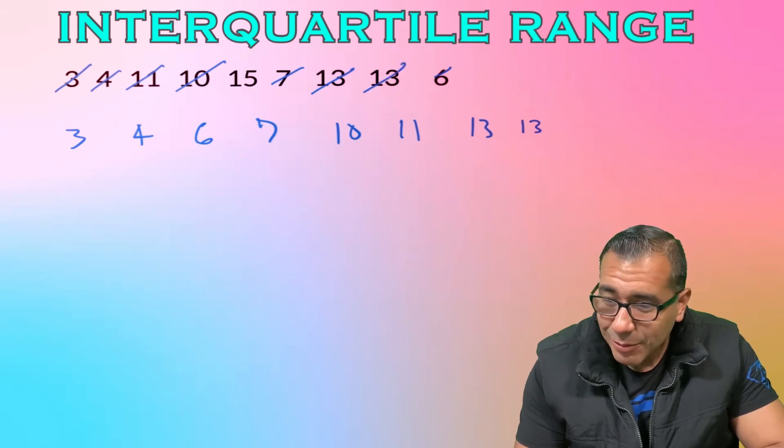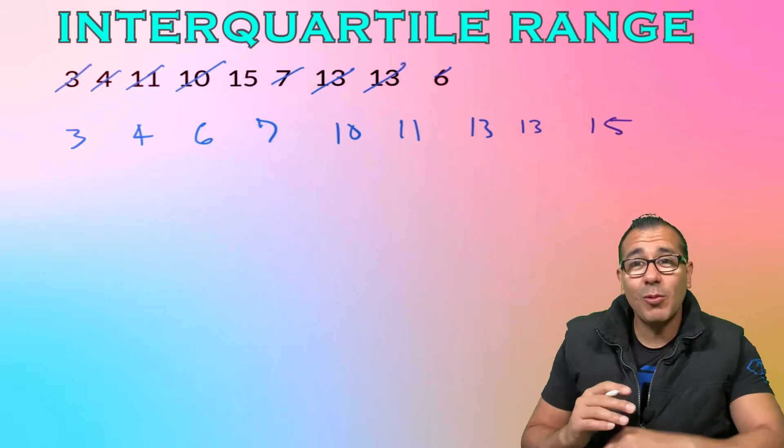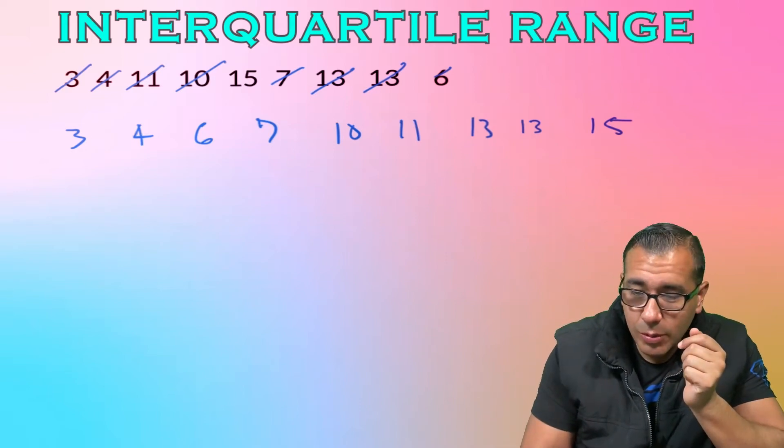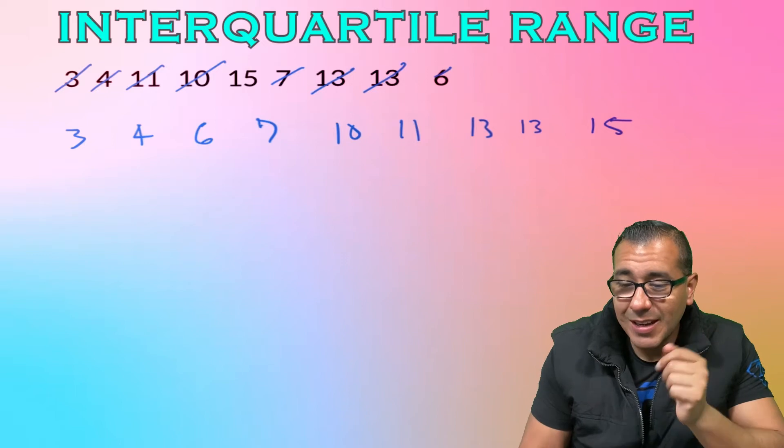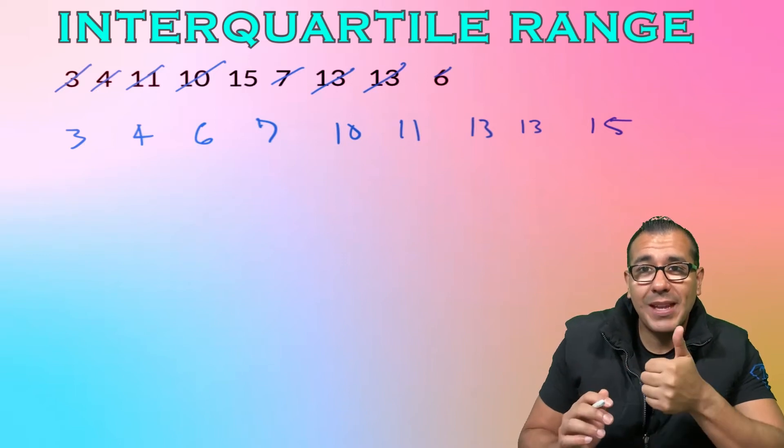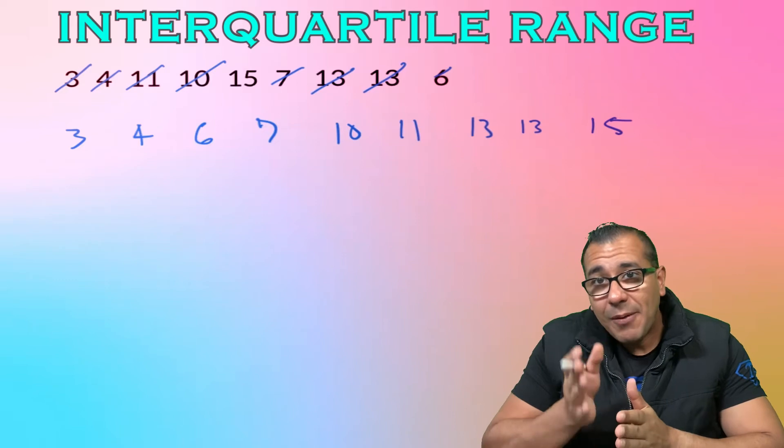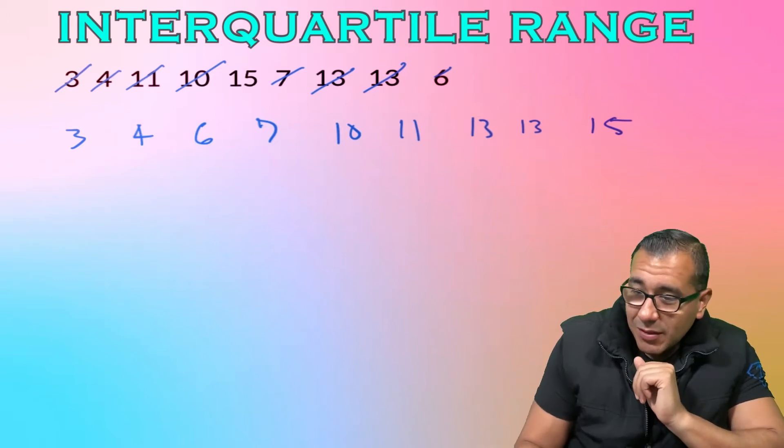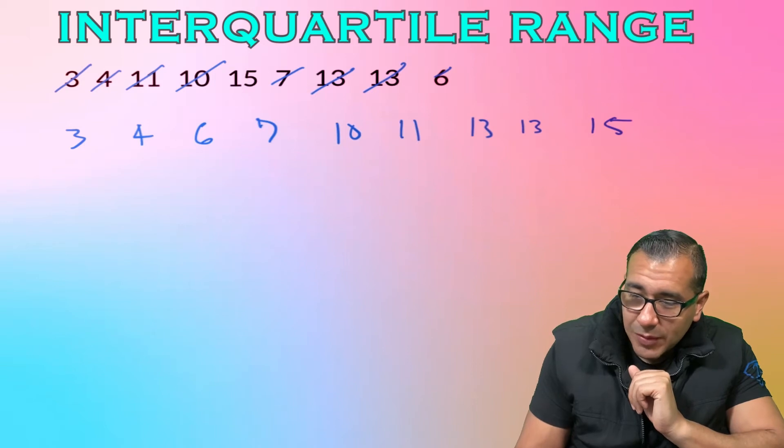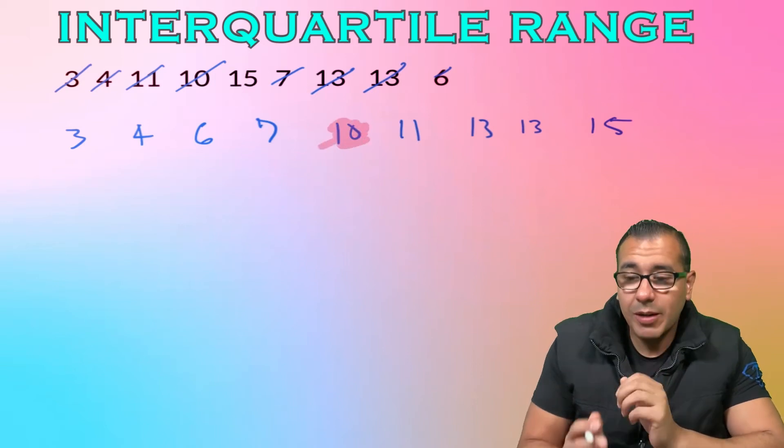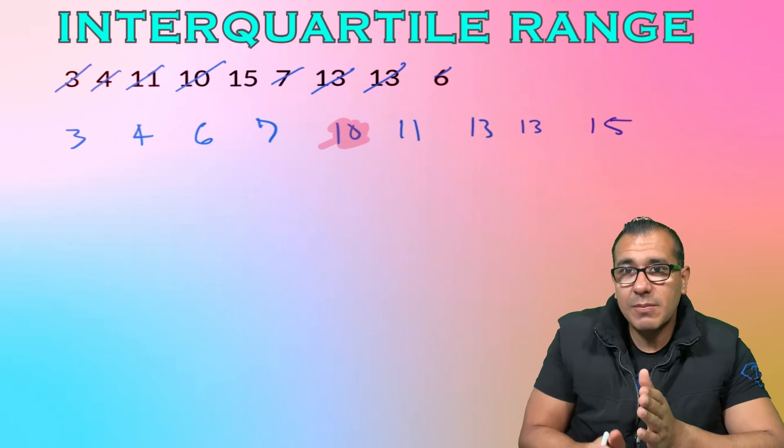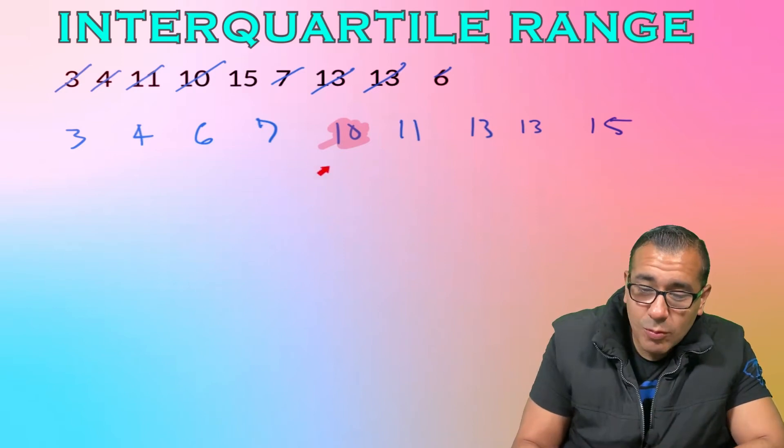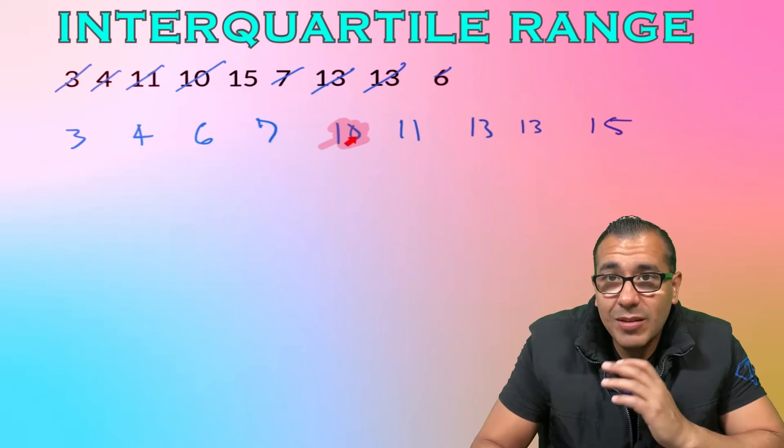Do I hear twelve? Nope, no twelve. We got thirteen, we got two thirteens, so let's cross both of those out. And then we got a fifteen. Step number one: make sure all those data points are in order. We have one, two, three, four, five, six, seven, eight, nine. Now identify that middle point, that 50 percent marker.